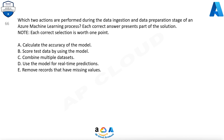Question 66. Which two actions are performed during the data ingestion and data preparation stage of an Azure Machine Learning process? Each correct answer presents part of the solution. A. Calculate the accuracy of the model. B. Score test data by using the model. C. Combine multiple data sets. D. Use the model for real-time predictions. E. Remove records that have missing values. The correct answers are C and E.